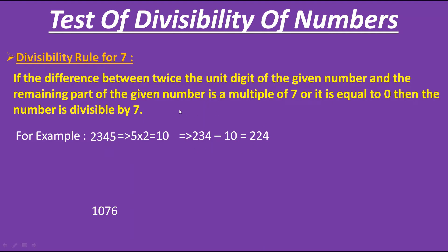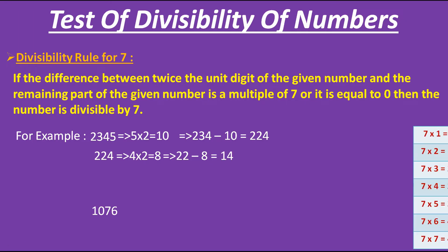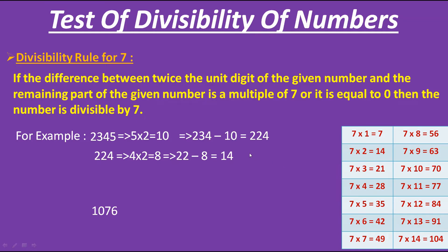We now check whether 224 is a multiple of 7. It is too large to tell directly, so we apply the rule again to 224. We double the unit digit 4: 4 × 2 = 8. The remaining part is 22. So 22 − 8 = 14. As we know, 7 × 2 = 14, so 14 is a multiple of 7. Therefore, as per the rule, the number 2345 is divisible by 7.